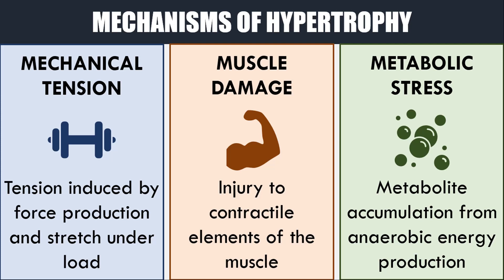To briefly summarise these mechanisms: mechanical tension is thought to be the primary driving factor behind muscle hypertrophy. It essentially refers to the muscle contracting under load and producing force during resistance training. Muscle damage refers to the micro-injury that occurs to the microscopic contractile elements of the muscle and hypertrophy occurring from the swelling and repair of these cells. And lastly, metabolic stress refers to the accumulation of by-products in the muscle that result from anaerobic energy production.